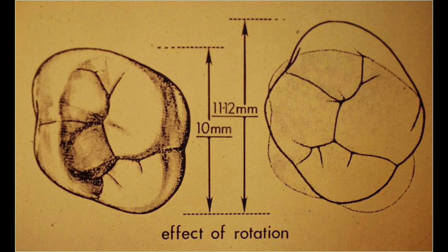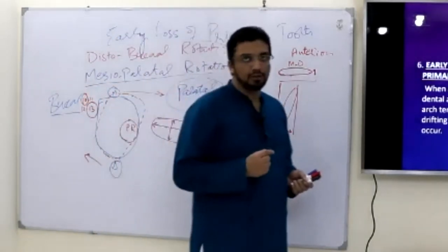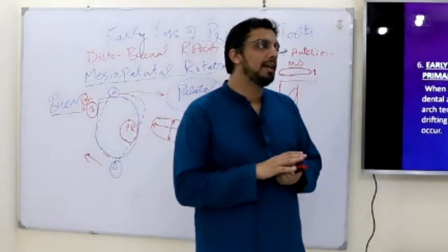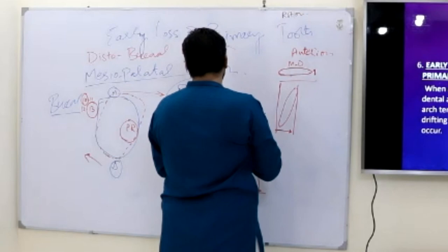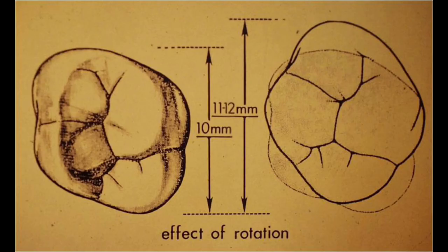The practical and clinical relevance of this is the concept of space regaining. In diagnosis, whenever you examine the cast or models, carefully examine the first premolar and especially its rotation. By derotating — reverting the rotation that has already occurred — you can gain up to 3 mm of space depending on the severity of the rotation, and this space can be utilized for the correction of crowding.